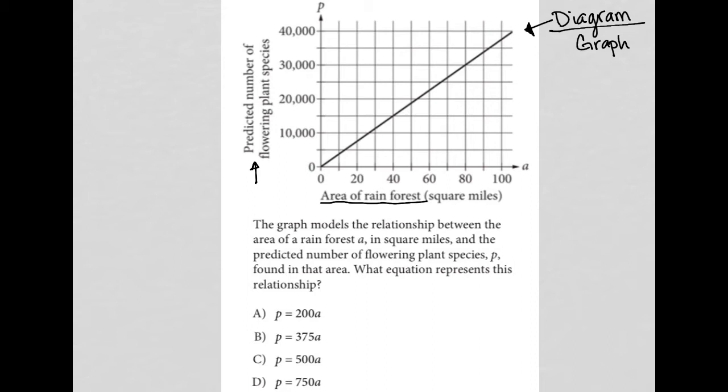So an 80 square mile area of rainforest should have about 30,000 flowering plant species. That's how we read this graph.